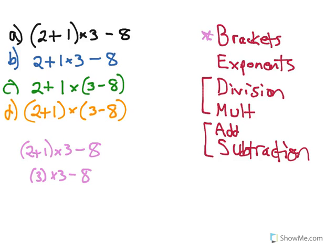No more brackets to deal with. I have the bracket, but everything inside of it is solved. So then I move down, there's no exponents, so don't have to worry about that. Division and multiplication. I can see there's multiplication here, so I'm going to complete that. 3 times 3 is 9. I still have the minus 8, I haven't done anything with that.